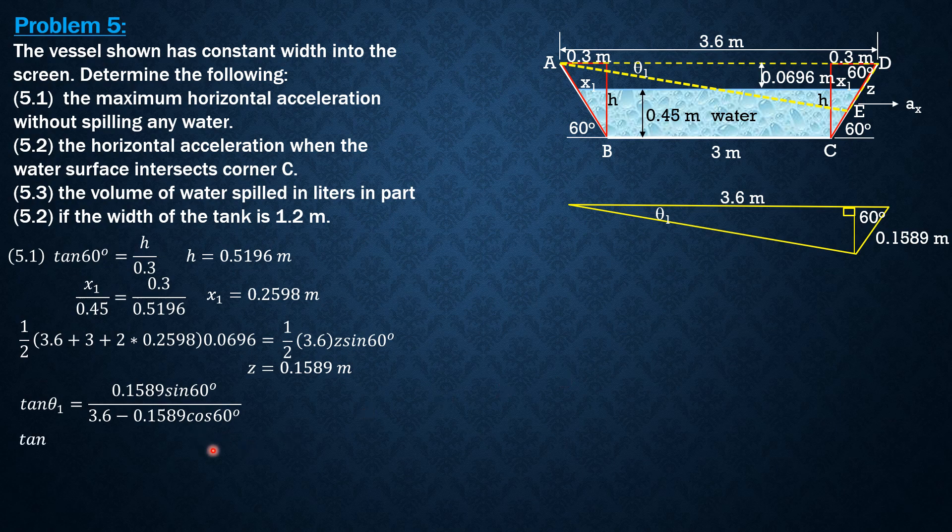So the height of this triangle is 0.1589 sine 60, while the adjacent side is 3.6 minus this distance, which is 0.1589 cosine 60. So tangent of theta 1 is 0.1589 sine 60 over 3.6 minus 0.1589 cosine 60. So tangent theta 1 equals 0.03909, that's the slope. Then we equate it to aₓ max over g because tangent theta equals aₓ over g, so aₓ max over 9.81, giving aₓ max equal to 0.3835 meters per second squared.